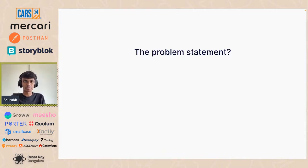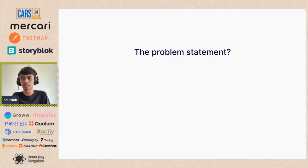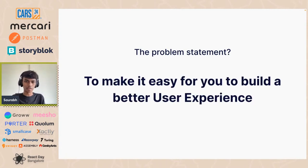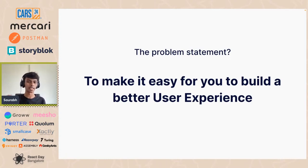So let's say we were about to build a frontend framework. When you're building anything, you first need a problem statement. The problem statement for a frontend framework would be something like: to make it easy for you to build a better user experience. That's what frontend frameworks do — they make it easy to build complicated user experiences that would otherwise be very difficult in a vanilla setup.